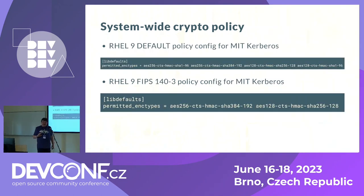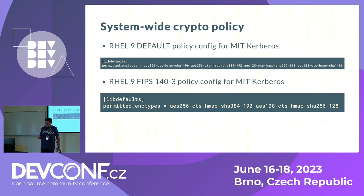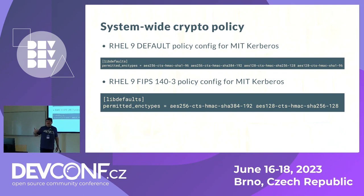When you get the default crypto policy on RHEL 9, you have this Kerberos configuration with permitted encryption types that include types from RFC 3962 — which use SHA-1 HMAC — and also the ones from RFC 8009 based on SHA-2. Under the FIPS policy, you get only the two encryption types from RFC 8009. A well-behaving application will only see these encryption types, only request them, and therefore only operate on them.